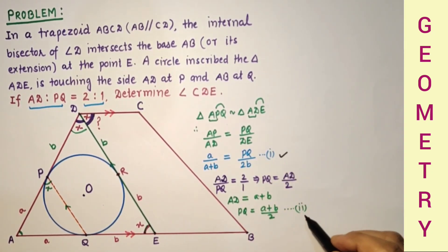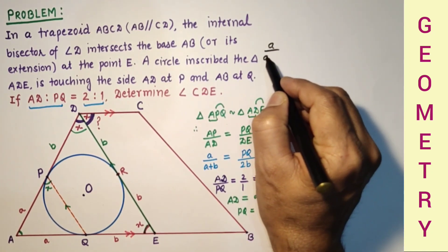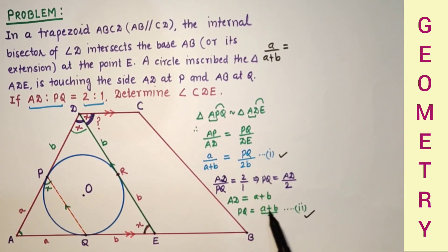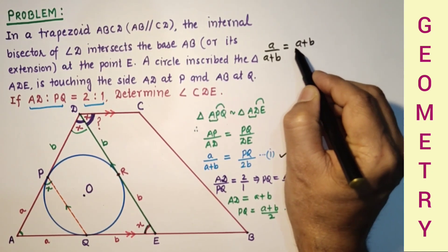Now using these two relations here, A by A plus B is equal to PQ, which is A plus B by 2, divided by 2B. So A plus B by 4B.